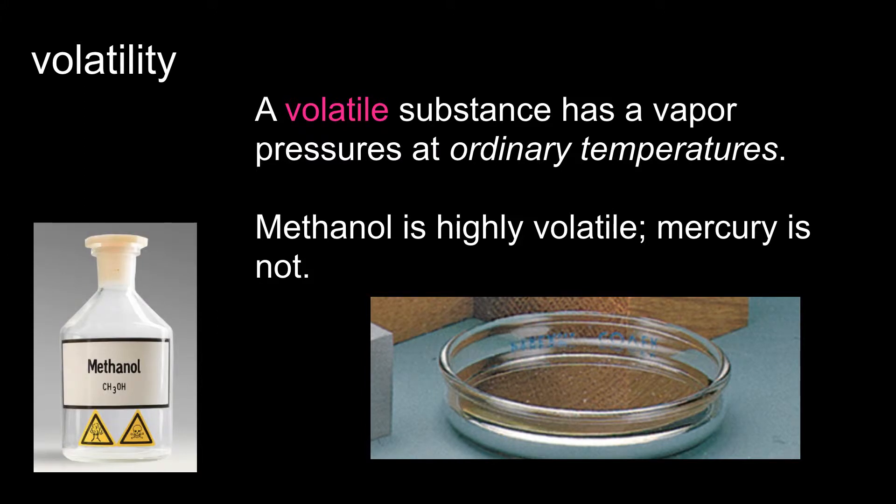Volatility is a measure of how easily a liquid evaporates. Methanol is a highly volatile liquid. It evaporates very quickly. Mercury is not a volatile liquid. It evaporates, but very slowly. The rate of evaporation is indirectly related to the strength of the intermolecular forces.